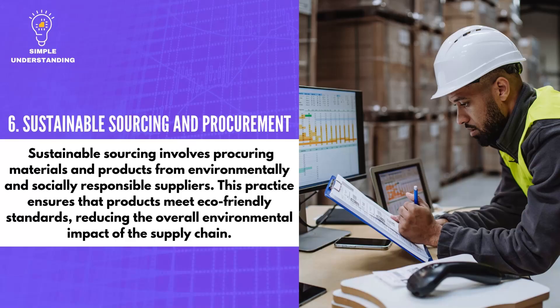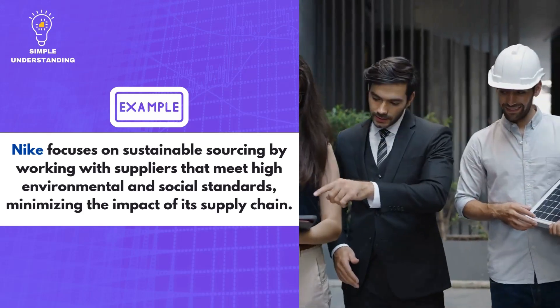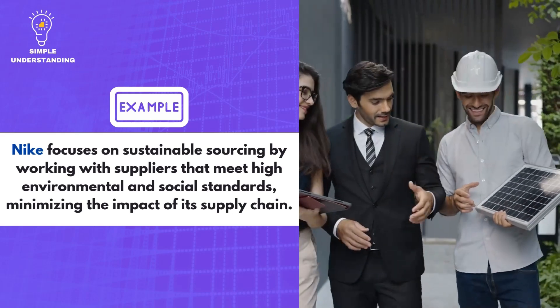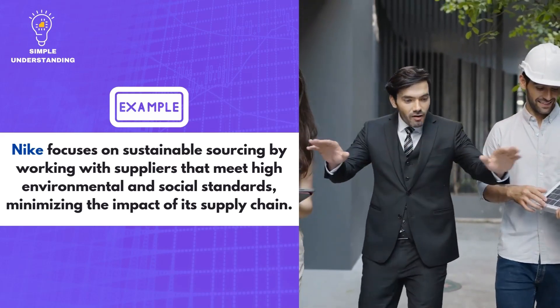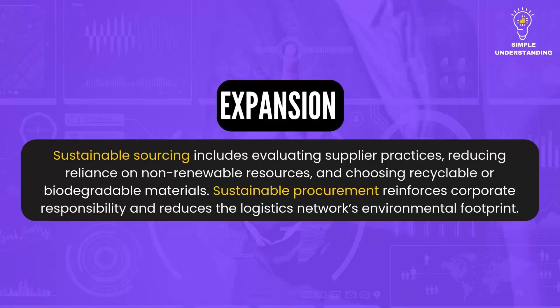6. Sustainable Sourcing and Procurement. Sustainable sourcing involves procuring materials and products from environmentally and socially responsible suppliers, ensuring that products meet eco-friendly standards and reducing the overall environmental impact of the supply chain. Nike focuses on sustainable sourcing by working with suppliers that meet high environmental and social standards, minimizing the impact of its supply chain. Sustainable sourcing includes evaluating supplier practices, reducing reliance on non-renewable resources, and choosing recyclable or biodegradable materials.